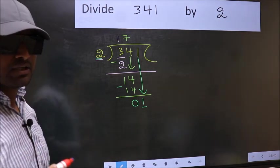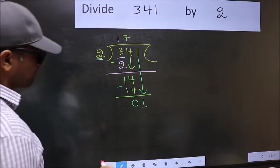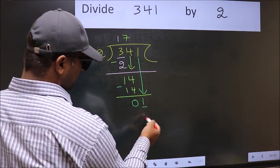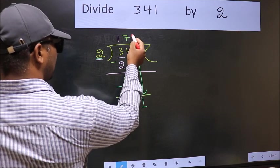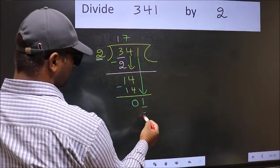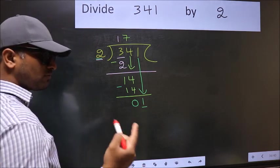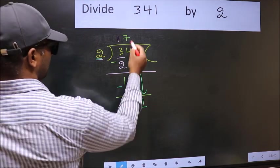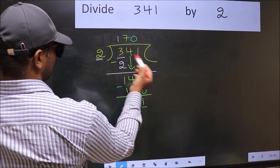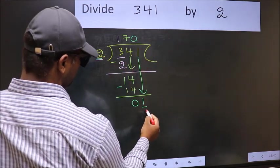Instead, what you should think of is, what number should we write here? If I take 1 here, I get 2. But 2 is larger than 1. So what we do is, we take 0 here. So 2 into 0, 0.